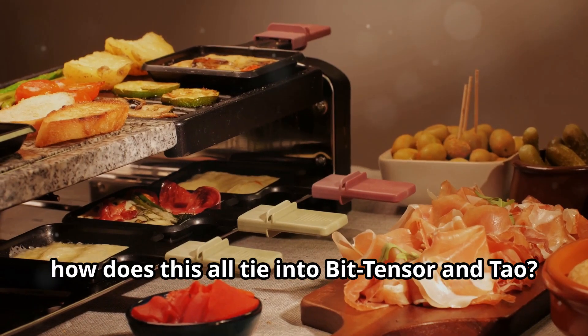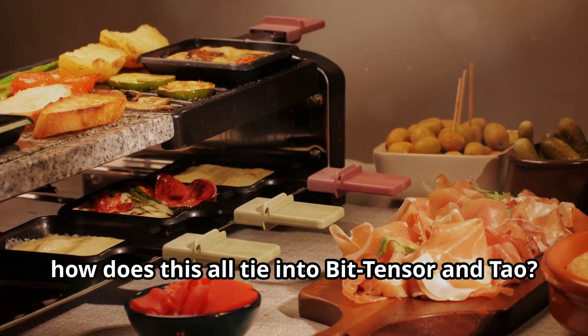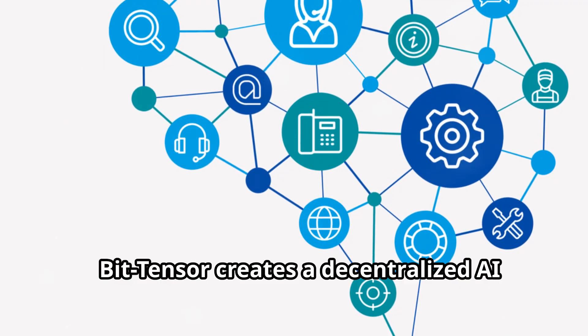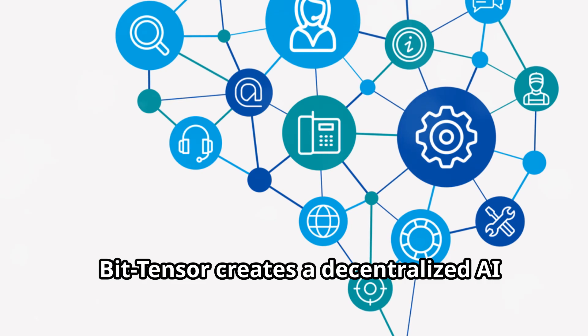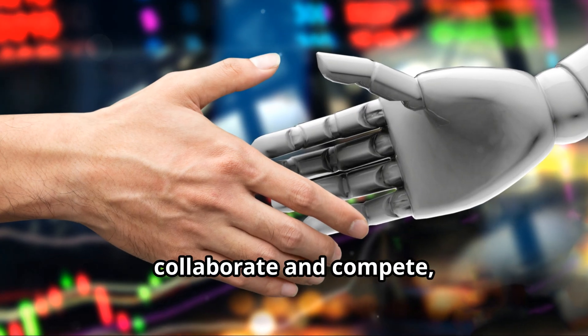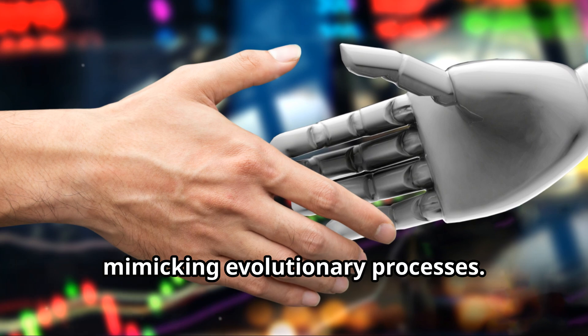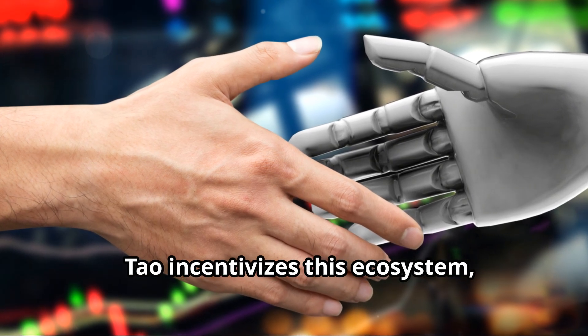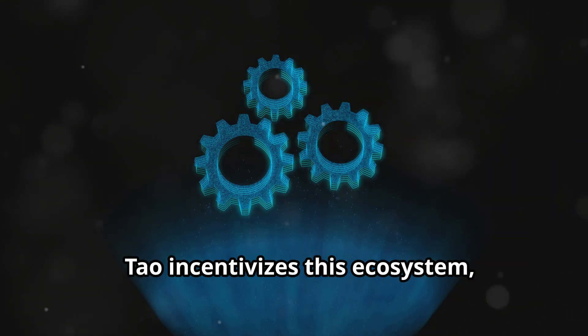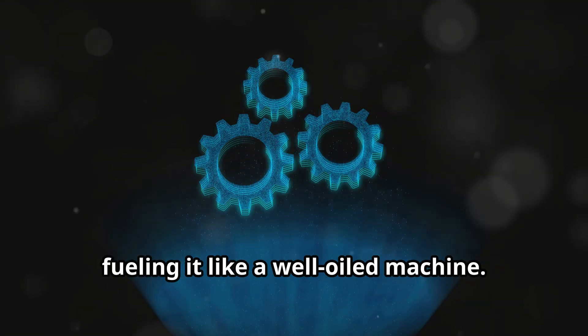So, how does this all tie in to BitTensor and Tau? BitTensor creates a decentralized AI ecosystem where multiple models collaborate and compete, mimicking evolutionary processes. Tau incentivizes this ecosystem, fueling it like a well-oiled machine.